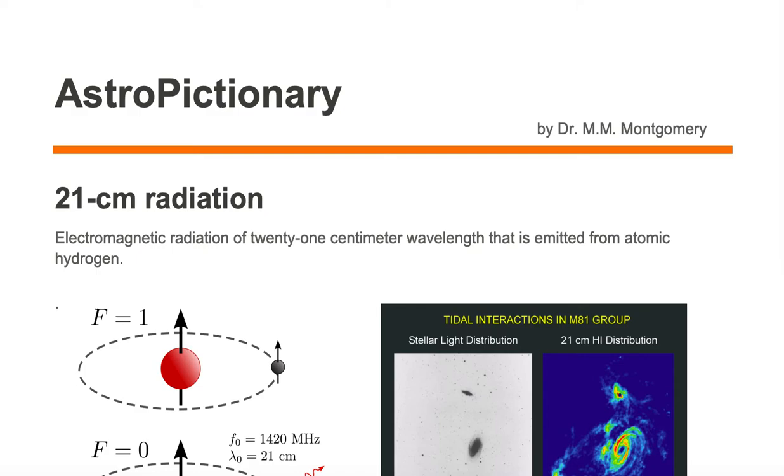21-centimeter radiation is electromagnetic radiation of 21 centimeter wavelength that is emitted from atomic hydrogen. Electromagnetic radiation, EM for short, is just another name for light. So light's being emitted at a very particular wavelength of 21 centimeters.